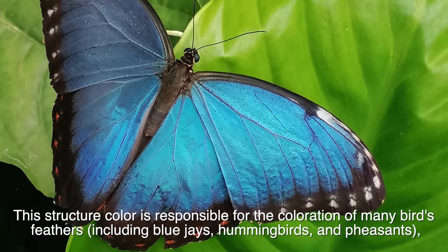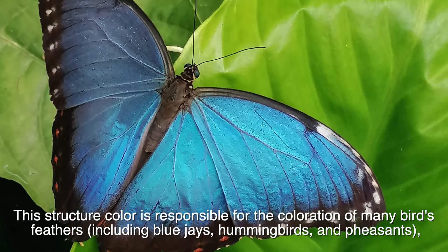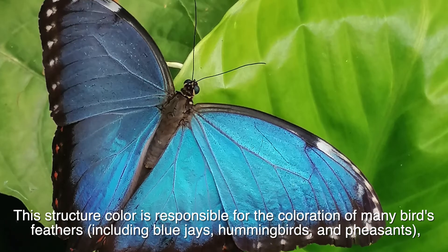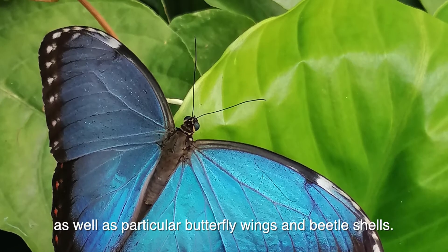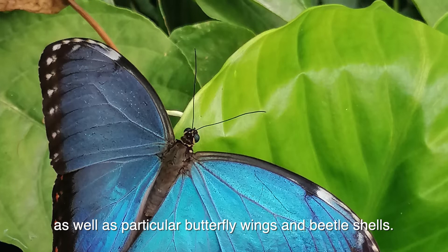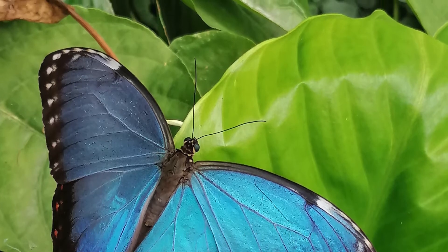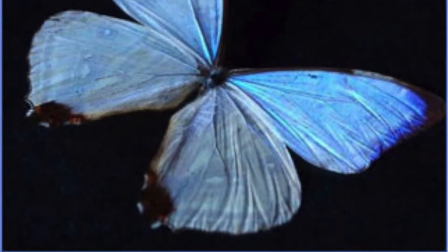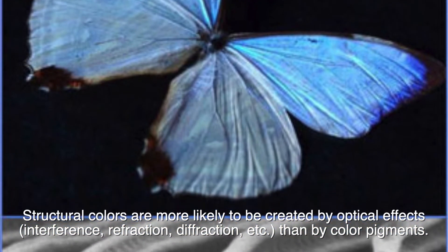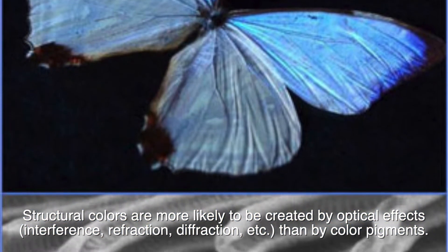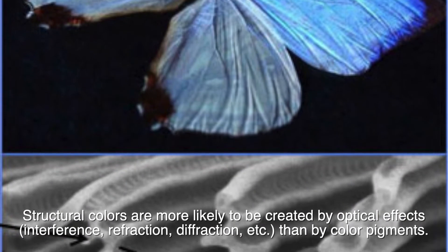This structural color is responsible for the coloration of many bird feathers, including blue jays, hummingbirds, and pheasants, as well as particular butterfly wings and beetle shells. Structural colors are more likely to be created by optical effects—interference, refraction, diffraction—